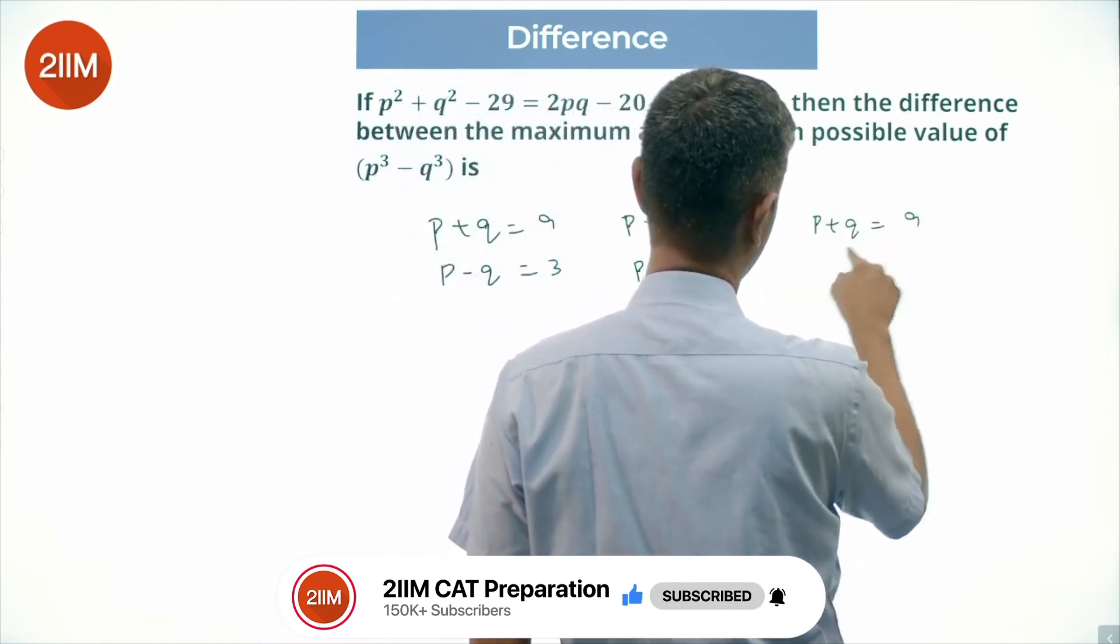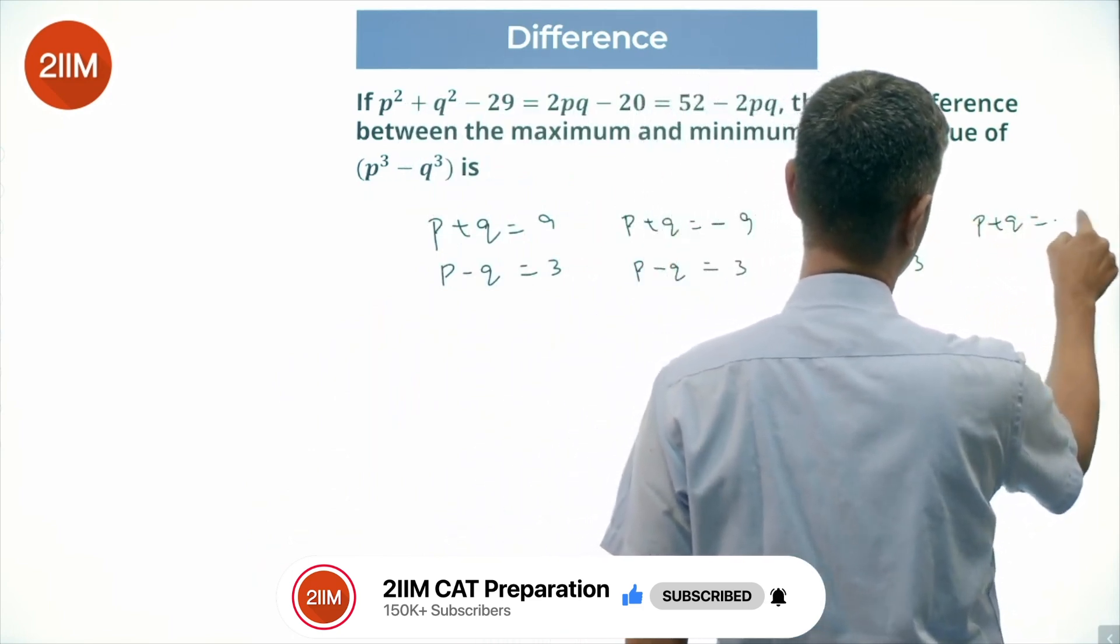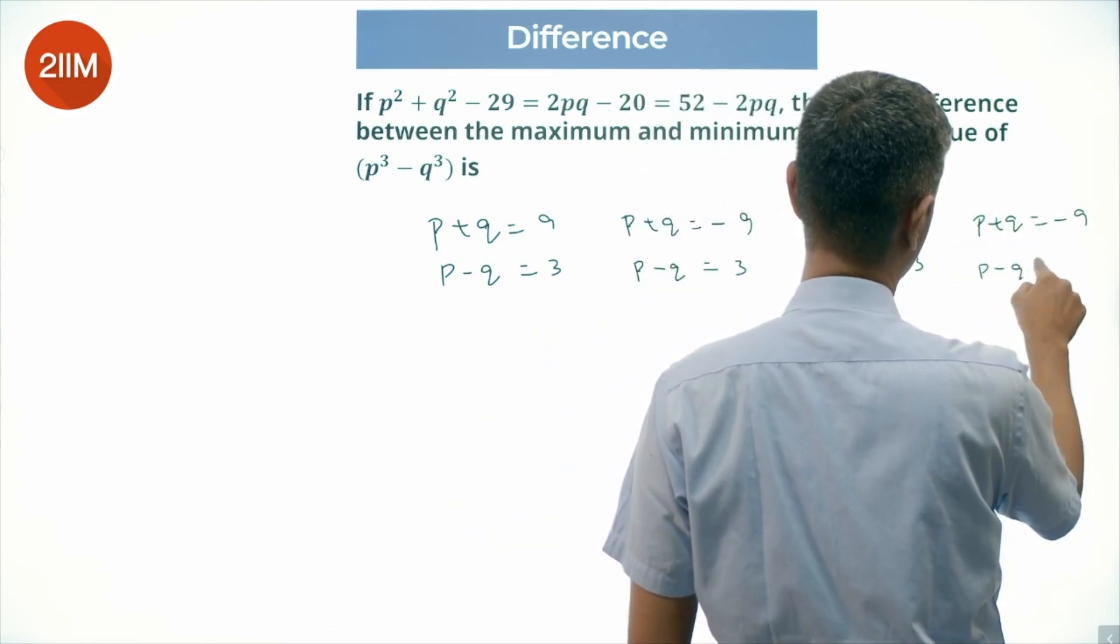P plus Q equal to 9, P minus Q equal to minus 3, P plus Q equal to minus 9, P minus Q equal to minus 3.